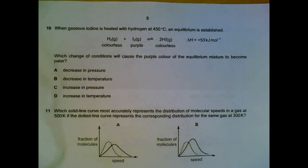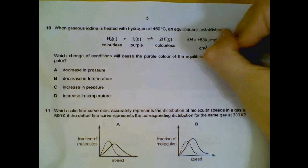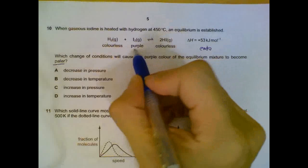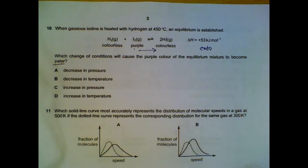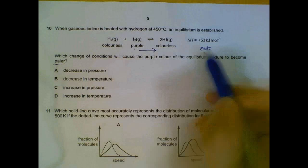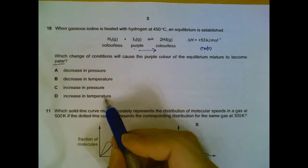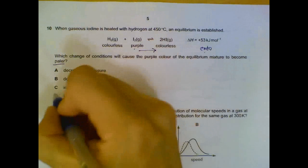The next question involves iodine and hydrogen iodide. The reaction is endothermic, and we want to find what change causes the purple colour to become paler — meaning we want to shift the equilibrium to the right. Looking at temperature: since the reaction is endothermic, increasing the temperature shifts equilibrium to the right, using up the purple iodine, and the colour becomes paler.